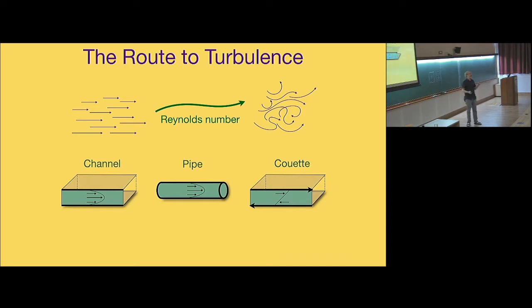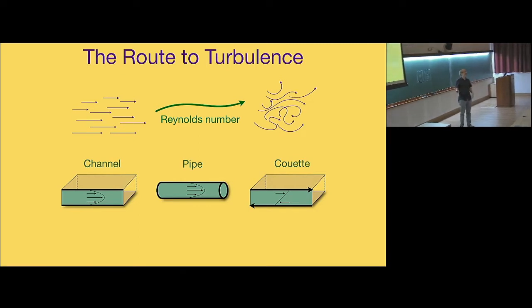One has wall-bounded shear flows. Classically, the oldest problem is flow through a pipe, which Osborne Reynolds began investigating over 125 years ago. We know simple laminar solutions for plane channel, pipe flow, and shear flow between parallel plates. As you increase the Reynolds number, the flow becomes turbulent. The question is, how does that happen? What route does it take from laminar to turbulent flow? It's a simple question to state, but an incredibly hard question to answer.